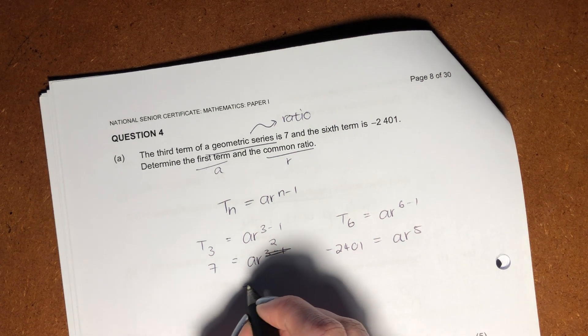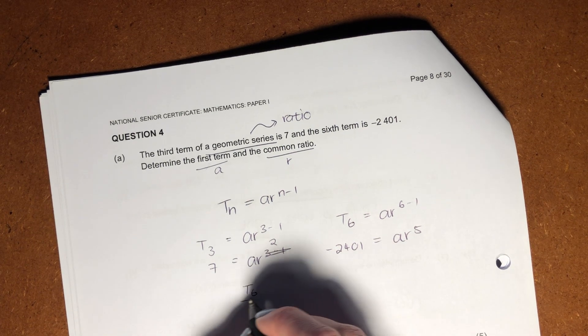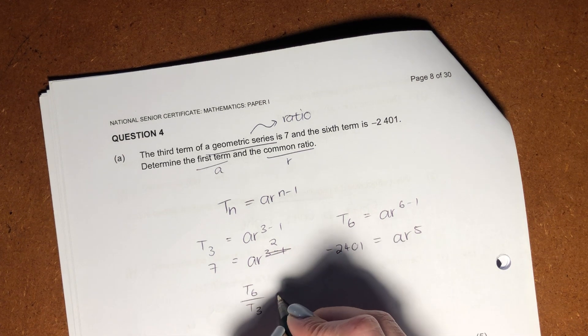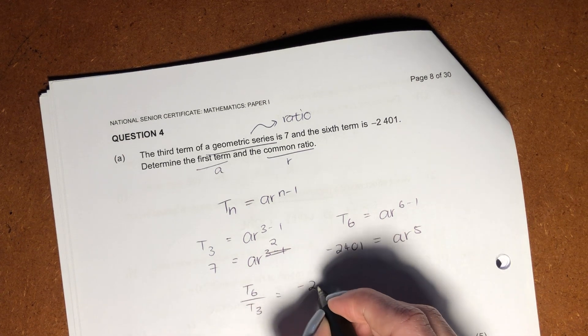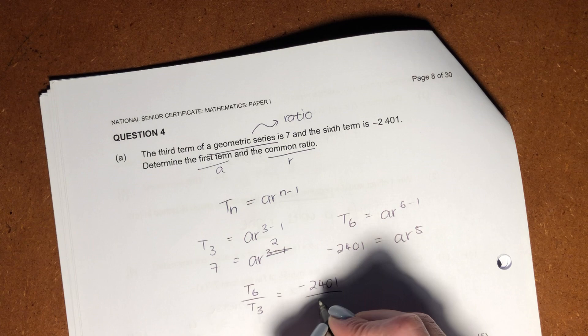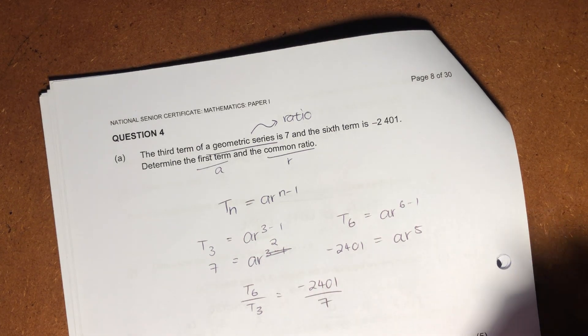Okay, I'm going to say, well, I want to try to find my common ratio, so I'm going to say T6 over T3 equals negative 2,401 over 7.